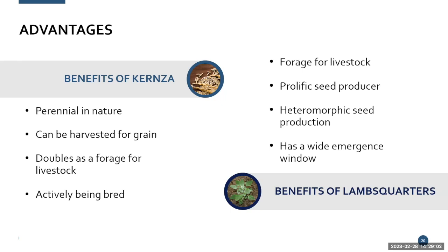Lambsquarters also produces a lot of seeds, giving us the capacity to distribute it broadly. Importantly, it has heteromorphic seed production — under stress it produces brown, non-dormant, stress-tolerant seeds to ensure progeny survival, while in ideal conditions it produces black, dormant seeds to avoid competition. There are many benefits of lambsquarters and kernza that we are looking into for possible use in remediation.